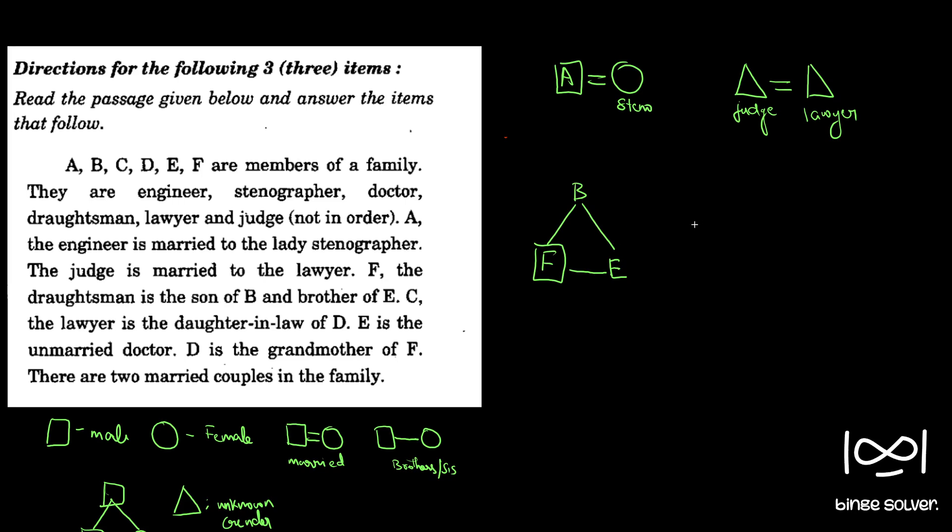C, the lawyer is the daughter-in-law of D. We have the gender now. C is the lawyer and is the daughter-in-law, so it is a female person and judge becomes the male person. C is married to a male person. C is the daughter-in-law of D, so it has to be like this. Daughter-in-law means husband's parent, so D is the parent of C's husband.